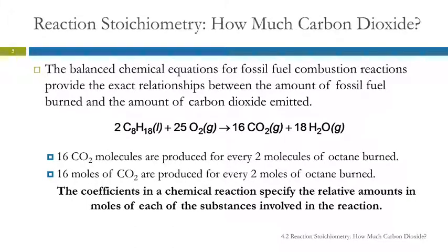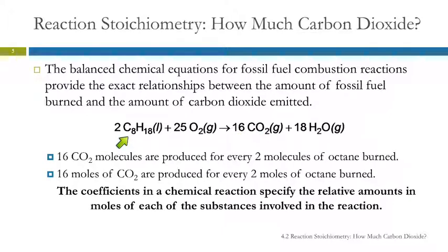Stoichiometry. Reaction stoichiometry allows us to identify how much carbon dioxide is released when a given mass of octane is burned. The exact relationships are pretty complicated, but we can give an overall representative equation, and that's what we've got here. What this equation tells us is that 16 molecules of CO2 are released into the air for every two molecules of octane that are burned.